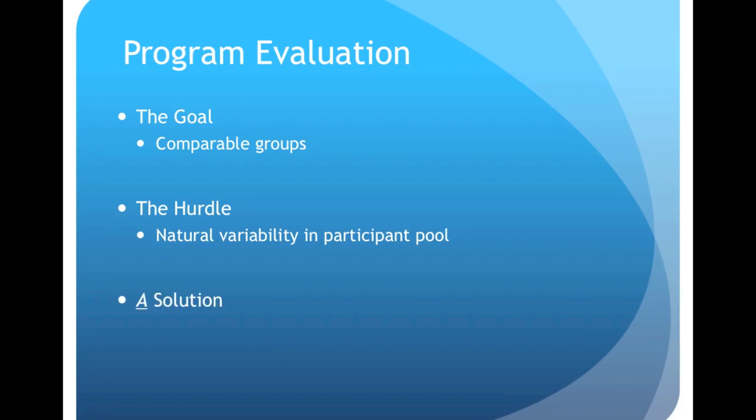One solution to the problem of equating across groups is to use a random process for participant allocation to groups. I can't stress the following point enough: Randomization to groups does not try to get rid of the natural variability in your participant pool, but rather seeks to equate across your groups on this variability. Let's look at an example to see if we can make sense of what randomization actually does for us.